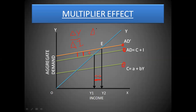Corresponding to this increase in investment, there is a manifold increase in the level of income. The difference between the green and orange lines is small, but the distance between the two income levels on the horizontal axis is much larger. This shows that the change in income is greater than the change in investment — and the reason behind this is the multiplier effect.